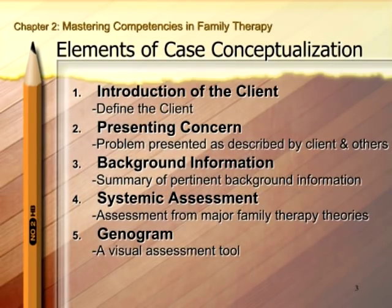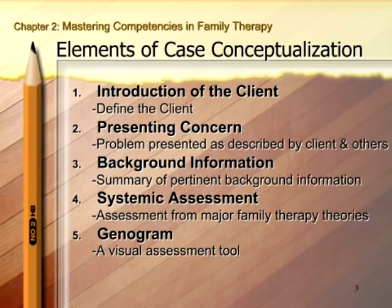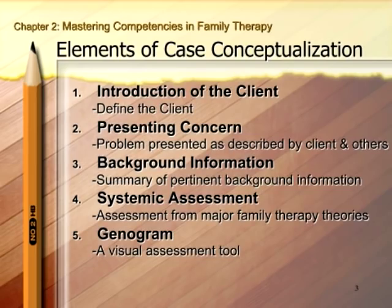The fourth section, systemic assessment, is really the bulk of the case conceptualization and this is where things start to get tough. This is where we go through and conceptualize what's going on using the major family therapy theories to understand the interpersonal dynamics. Finally, we have the section on the genogram, which is an assessment tool that comes out of intergenerational Bowenian family therapy but is very useful no matter what approach you work from — another tool for understanding family dynamics.